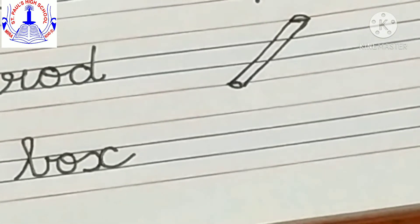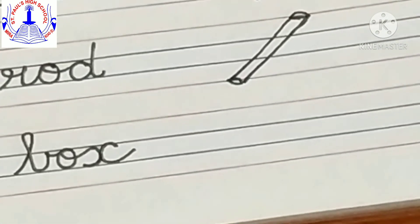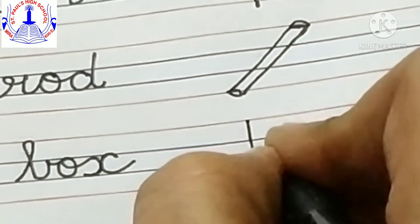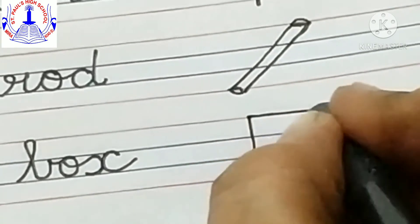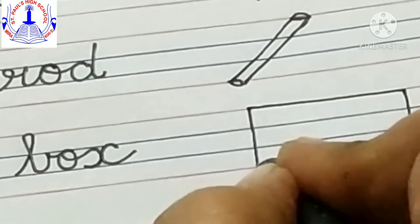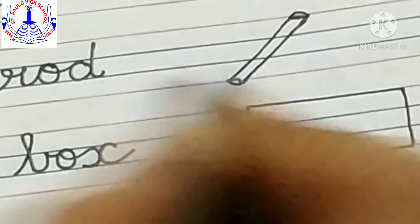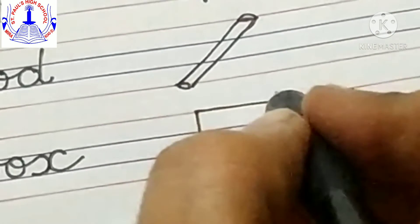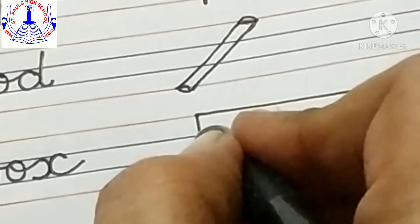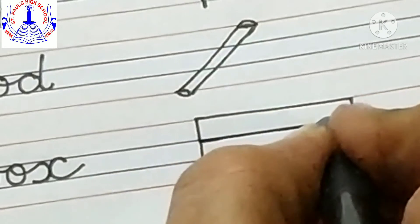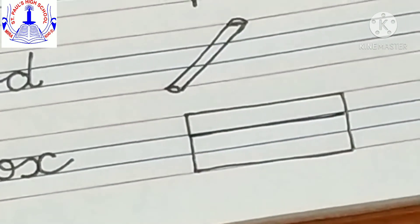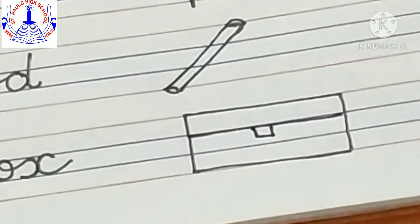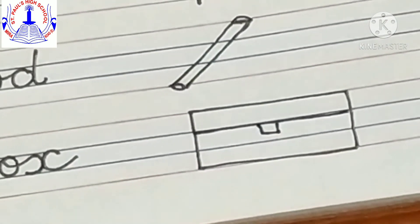Next is box. For box, make a rectangle this way, then a sleeping line in between, and a small square in the center. This is a box.